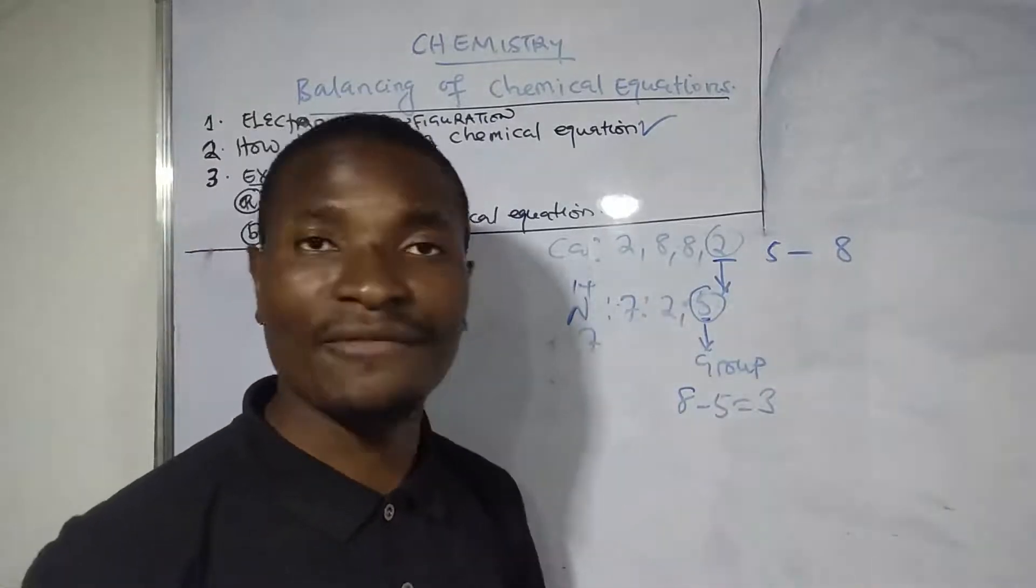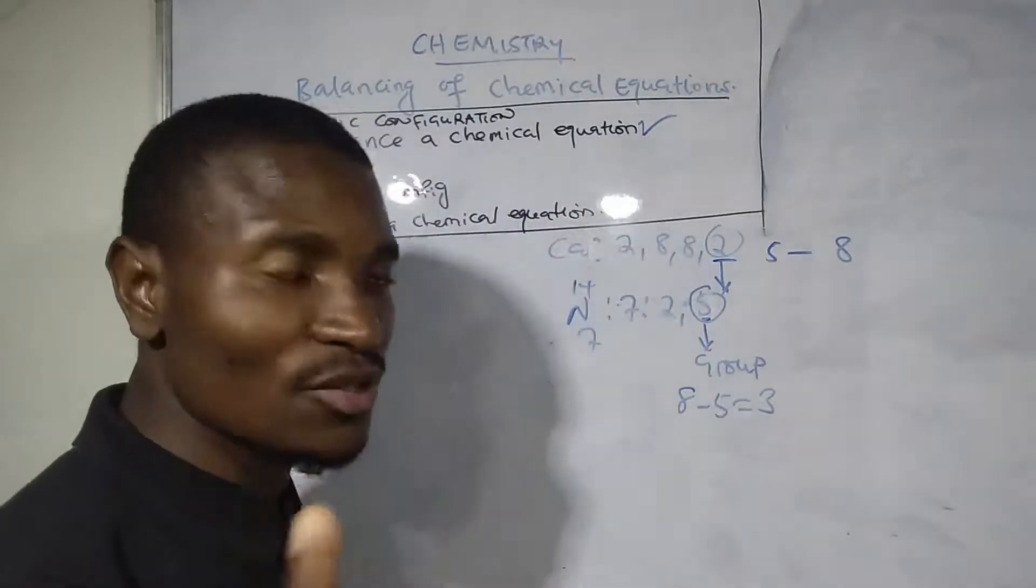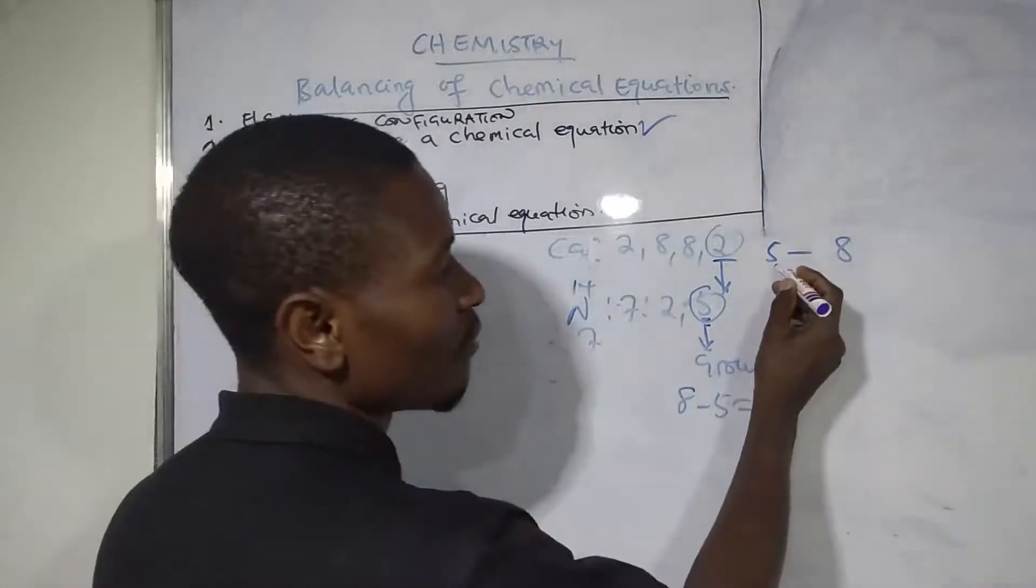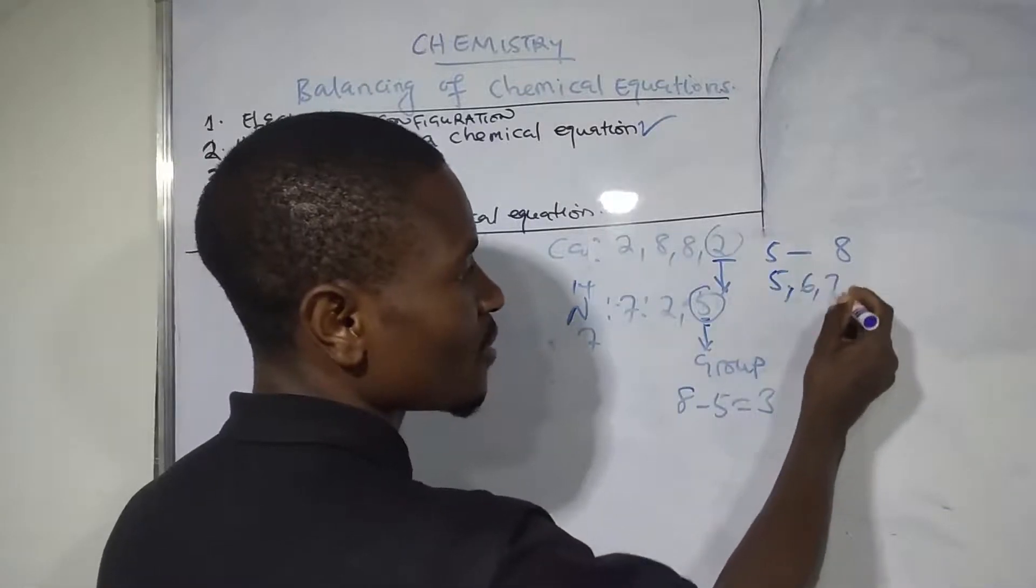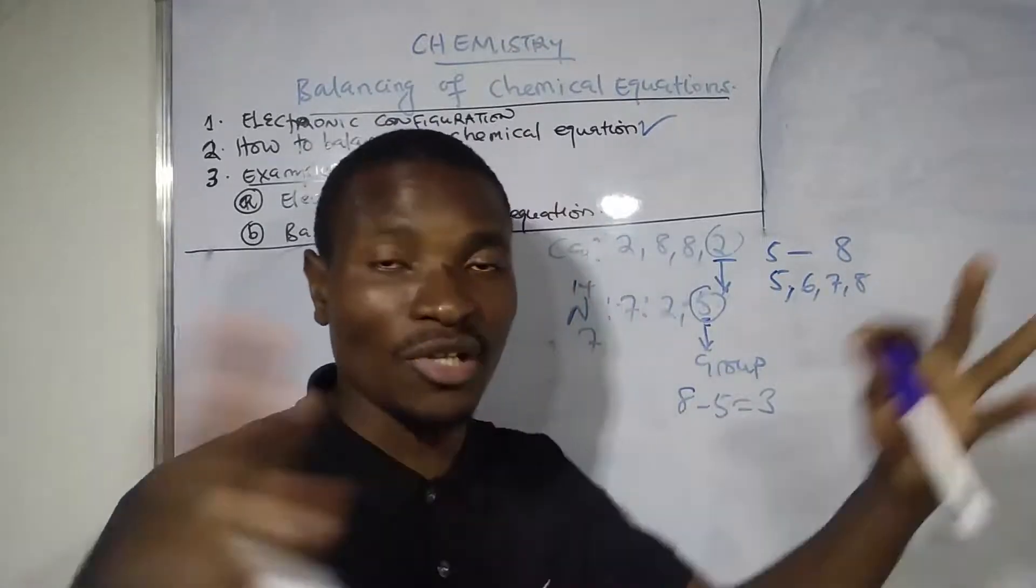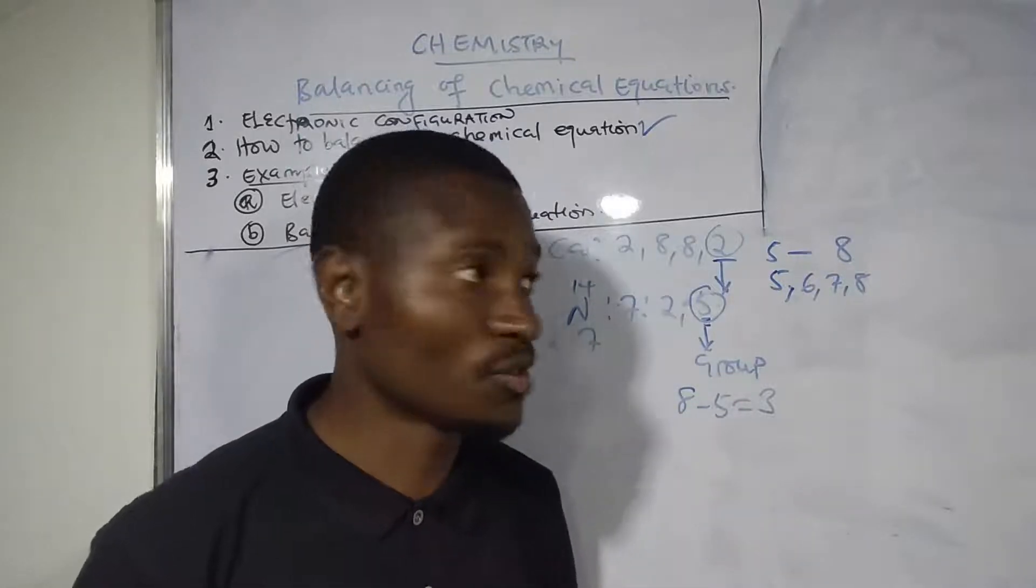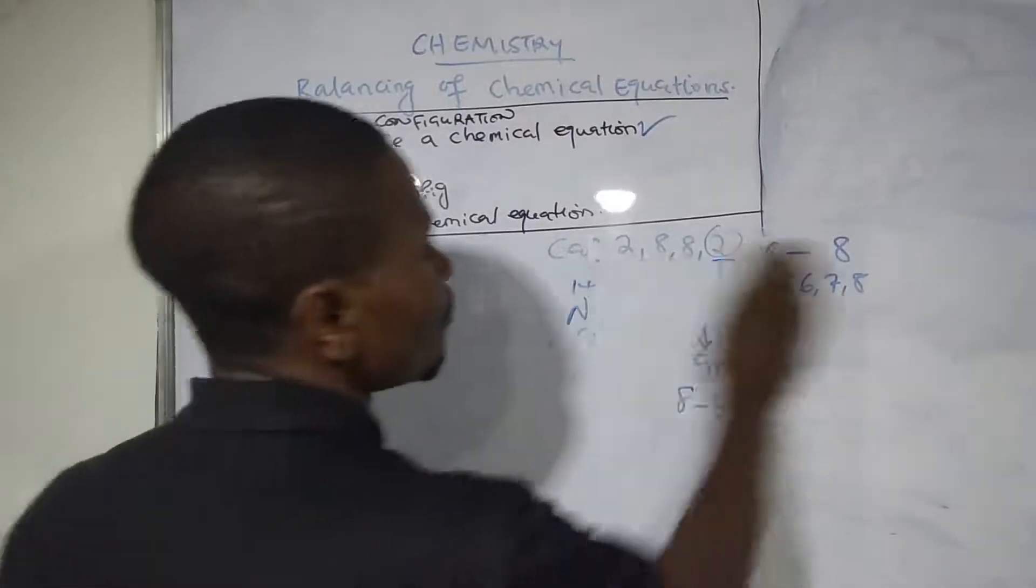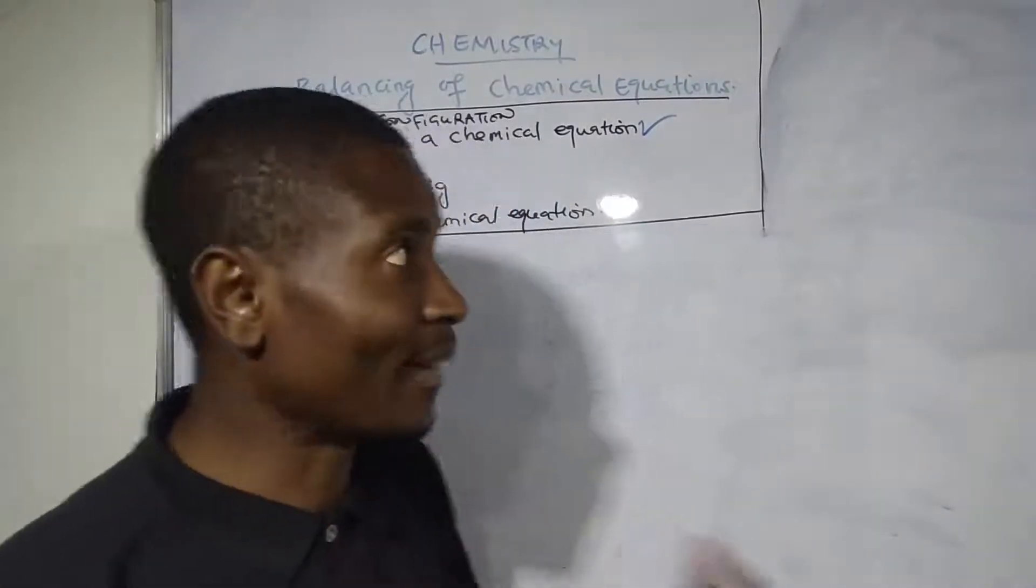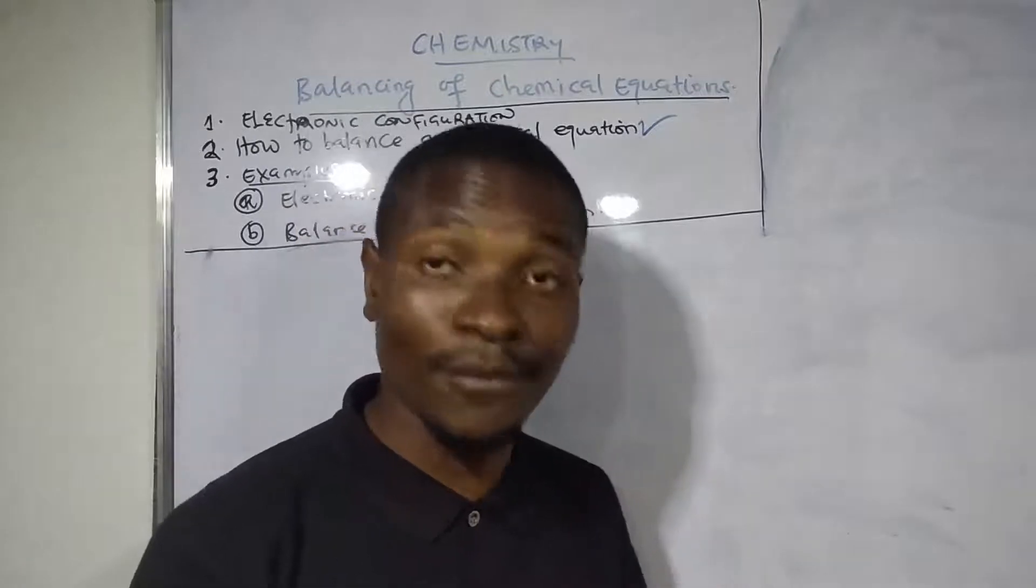But for elements that have 5 and above in the last shell, the valence becomes something else. Whenever the last number in the last shell is 5, 6, 7, or 8, you need to subtract that number from 8, which is the total number of groups on the periodic table. Having emphasized that part, let's now look at the actual balancing of a chemical equation.